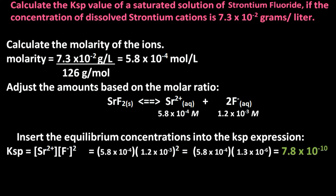Now insert these concentrations into the KSP expression: 5.8 times 10 to the minus 4 times 1.2 times 10 to the minus 3 squared equals 5.8 times 10 to the minus 4 times 1.3 times 10 to the minus 6. The product will be 7.8 times 10 to the minus 10, which represents the KSP value for strontium fluoride. Notice that no units are written for the KSP value — KSP values are dimensionless, which means no units should be written.